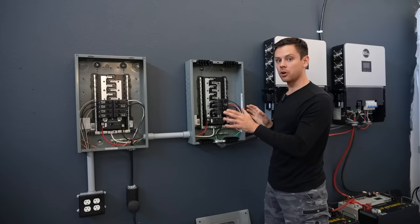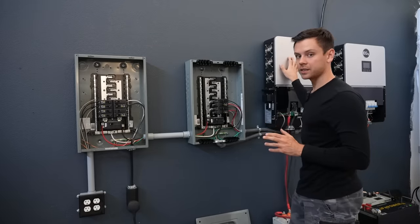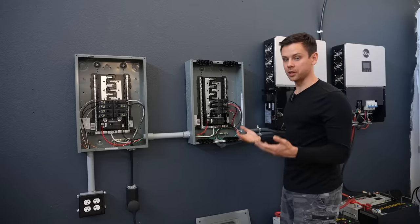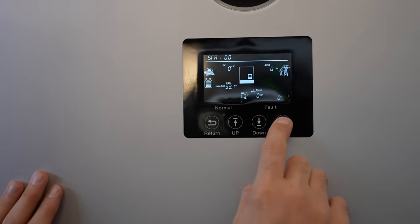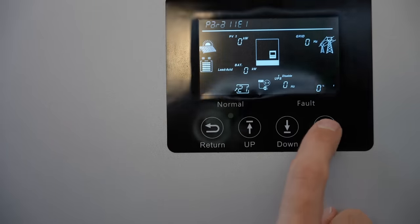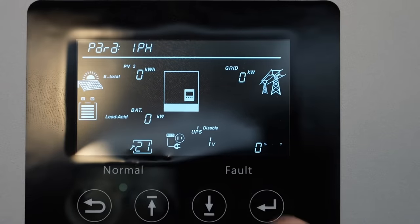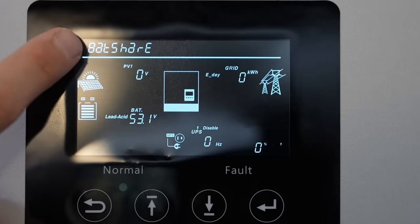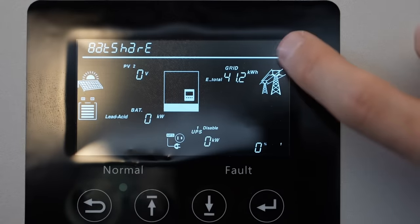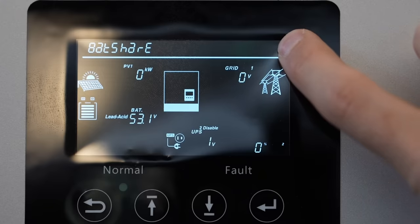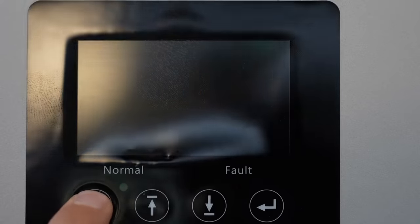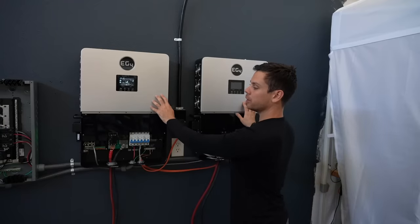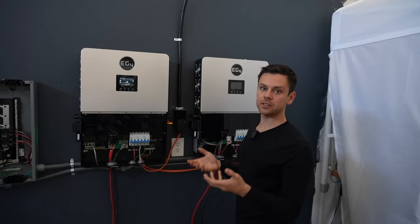Now that everything's wired let's talk about the programming. All you have to do is change a couple settings on the 6000 XP and they will be in sync so you can run loads together and double your output capacity. First hold down enter until you reach the settings. Go down to setting number 21 and then press enter. You want to select one PH and then press enter. And then P1 and then press enter. And then battery share because they're all connected to the same battery. You want to enable it. It comes disabled but make sure that you enable that. And then press enter and that's it. It will flash which means it updated the settings.